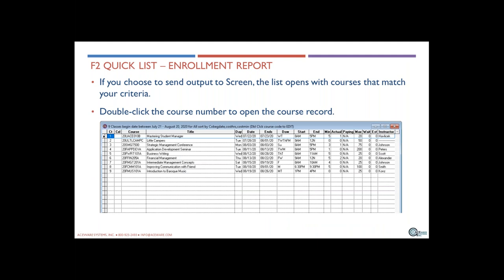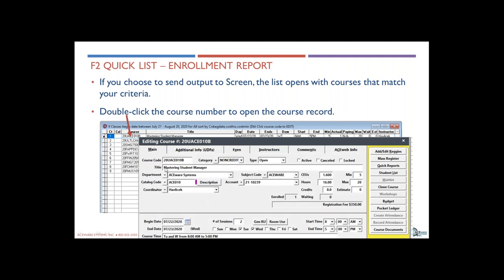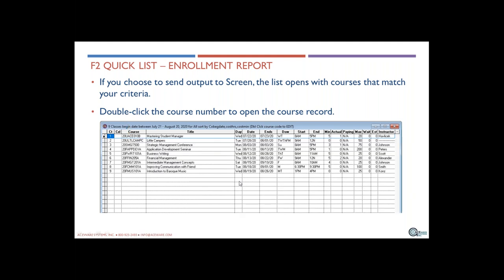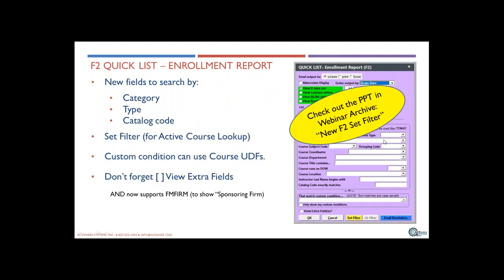When you bring up a list of courses with F2 and want to drill down, you can just double-click on the course number and it will bring up the class tied to that course number. In my opinion, this is a great way to edit a group of classes — for example, all classes with a certain grouping code or course type.